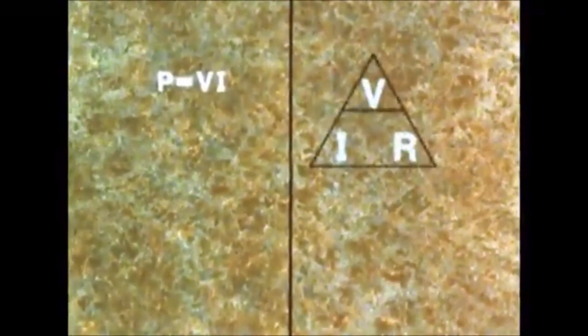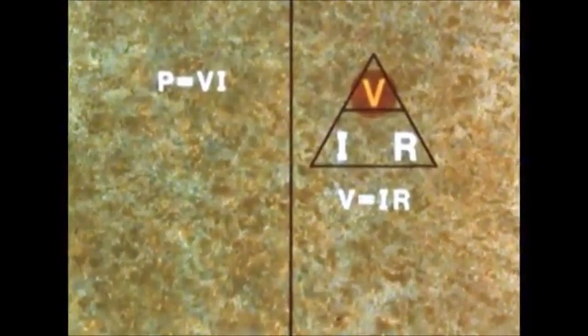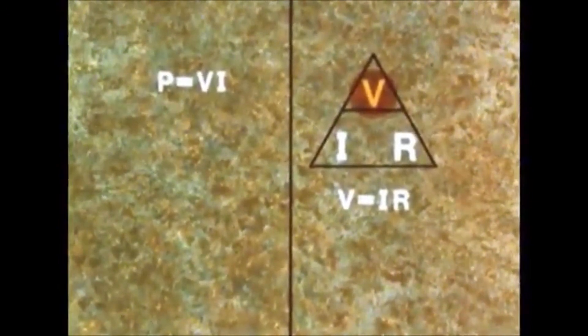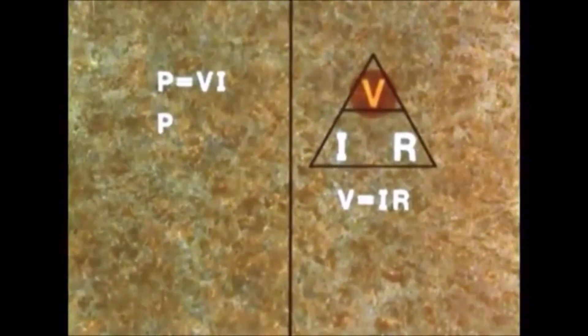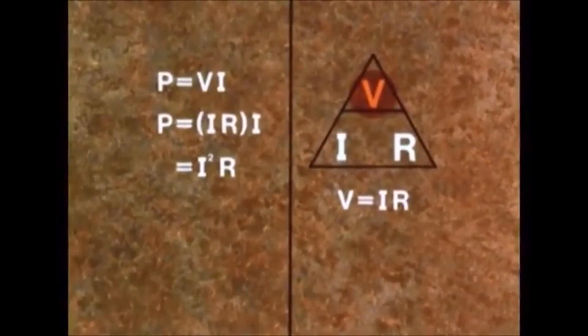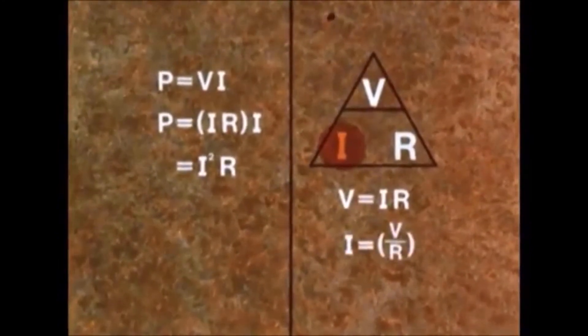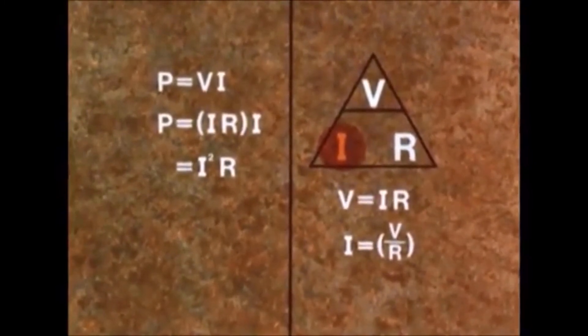There are other ways of expressing the power formula P equals VI. You remember the Ohm's law triangle, from which we can say that V equals IR. So if in the power formula we put V equal to IR, it simplifies to P equals I squared R.